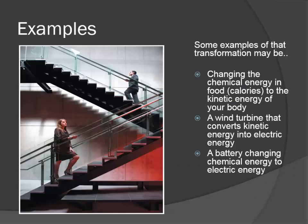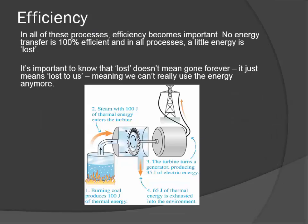So some examples of energy transformation could be using the energy that's in food to power your body, to give you energy to go up the stairs, or a wind turbine that uses the kinetic energy of moving air to convert that into electrical energy, or even a battery. A battery has chemical energy inside of it and that chemical energy gets transferred into electrical energy.